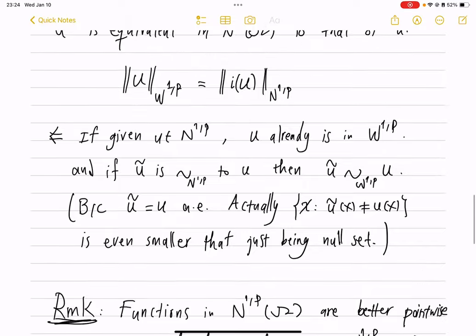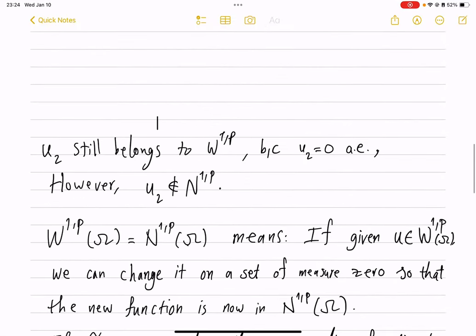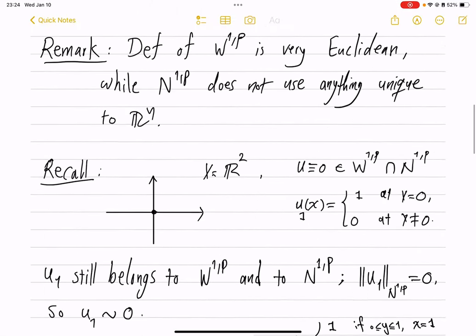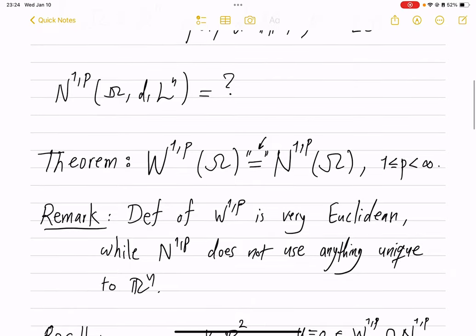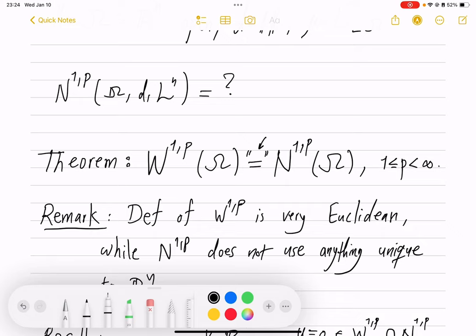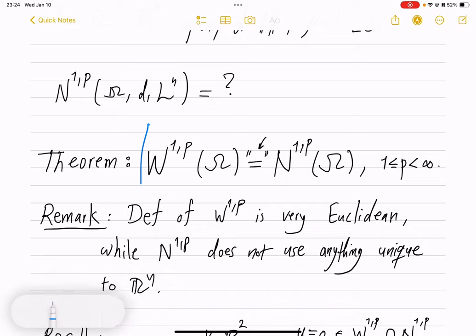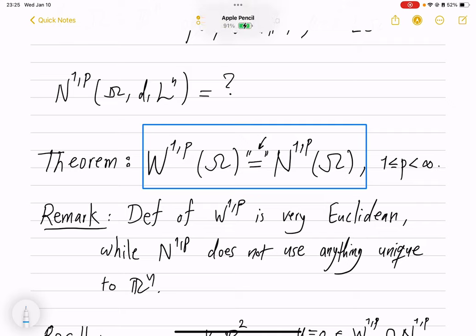So we went into subtleties of what this equality means which is necessary to really understand, but the takeaway message again is that the abstract theory we have produced does give back something concrete and so next video we will continue with other examples in other contexts of what N^{1,p} looks like.